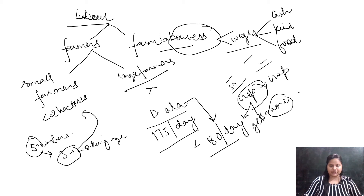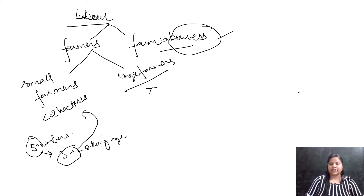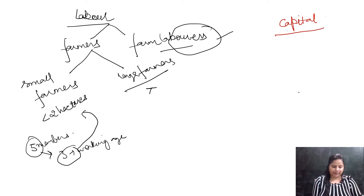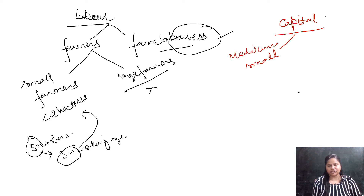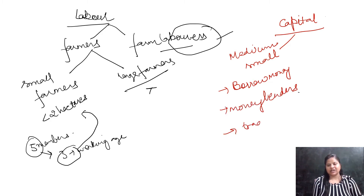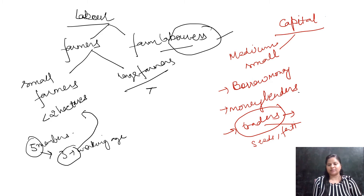Now we need to see how capital is being arranged in village Palampore. Capital includes any fixed investment or day-to-day working capital requirements needed to run a business. For medium and small farmers, since their yield is not very high and they have a small plot, they borrow money from money lenders and traders. Traders are persons who trade in agriculture-related commodities like seeds, fertilizers, pesticides, and manure. Small farmers get all their inputs on credit and repay the full amount with interest after harvesting.